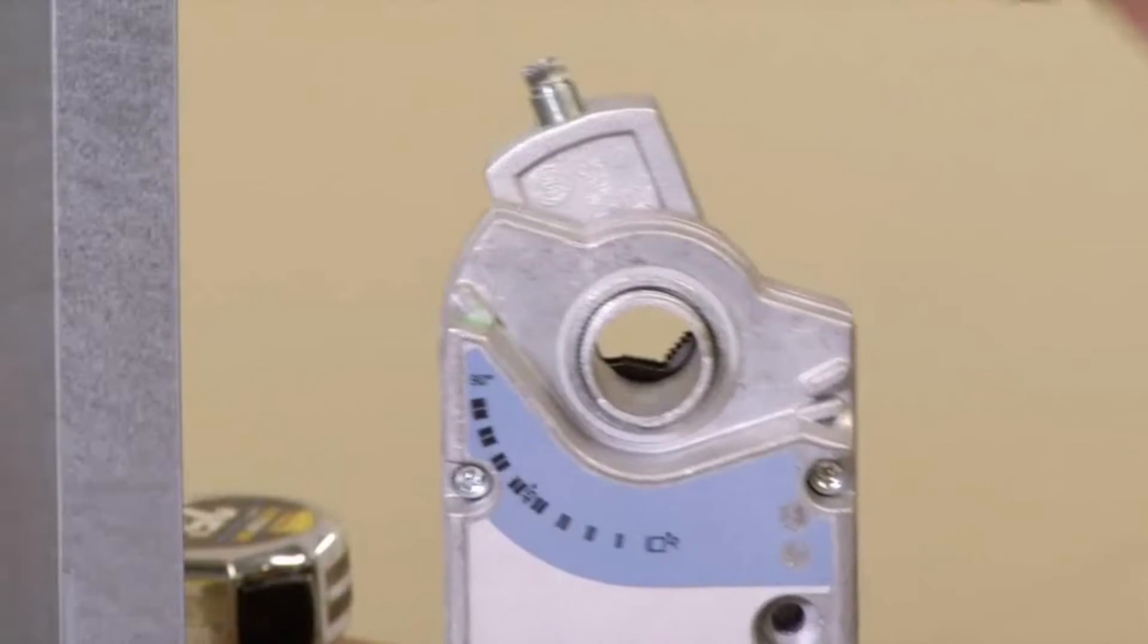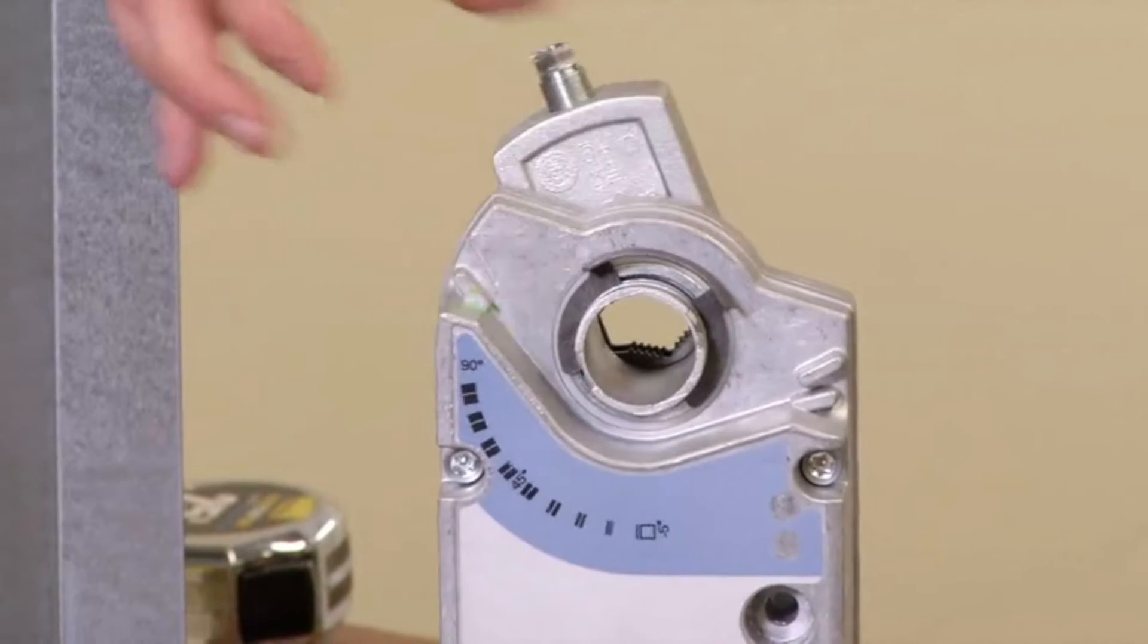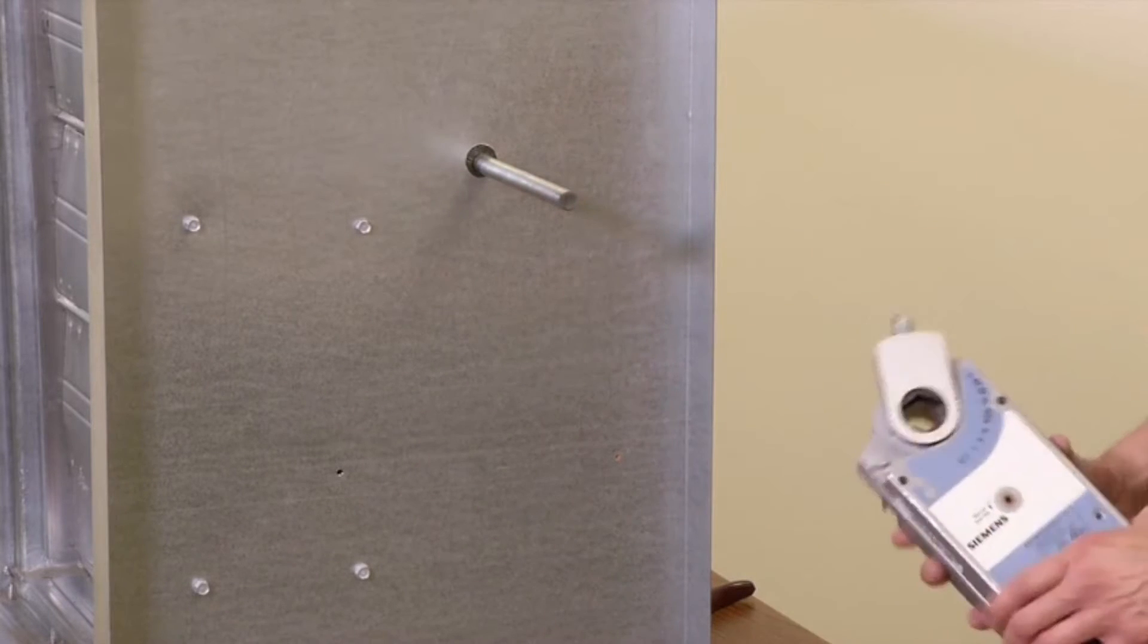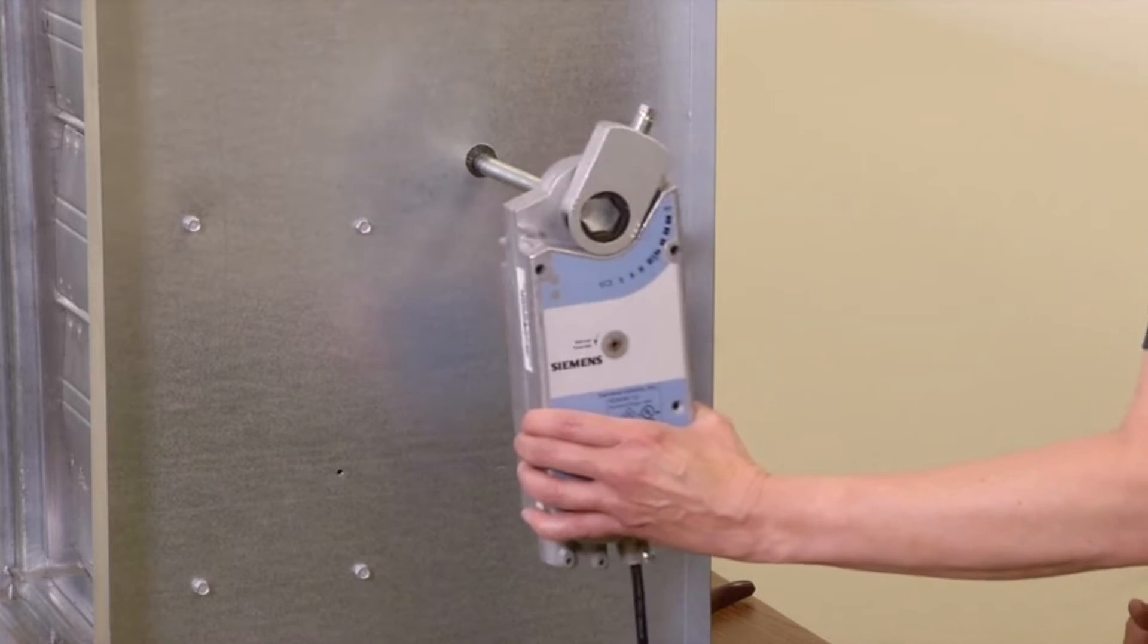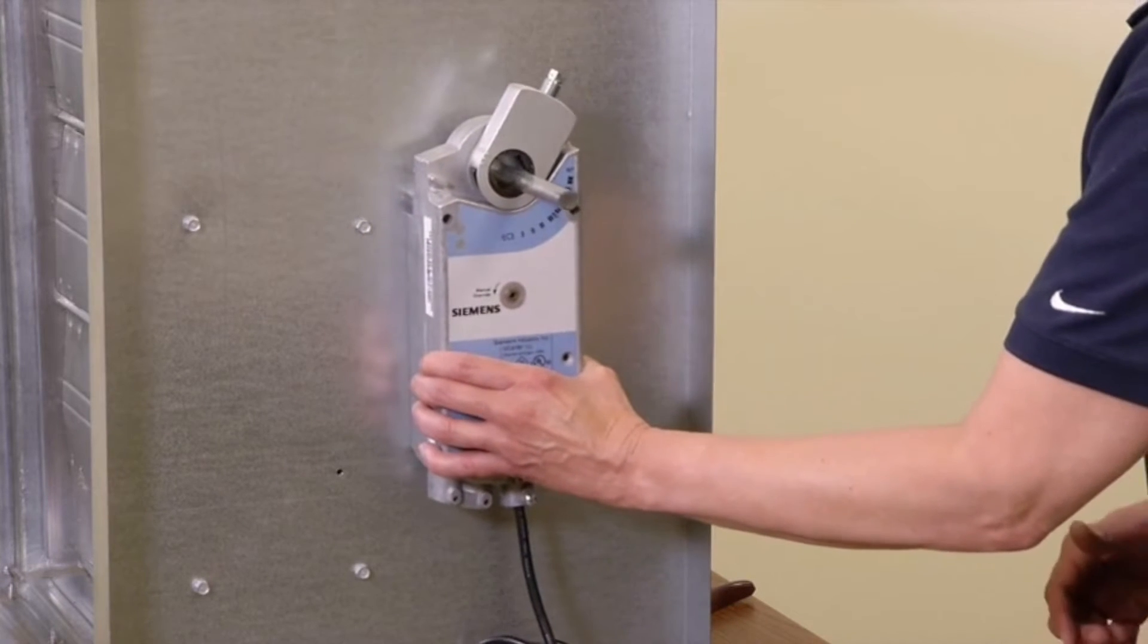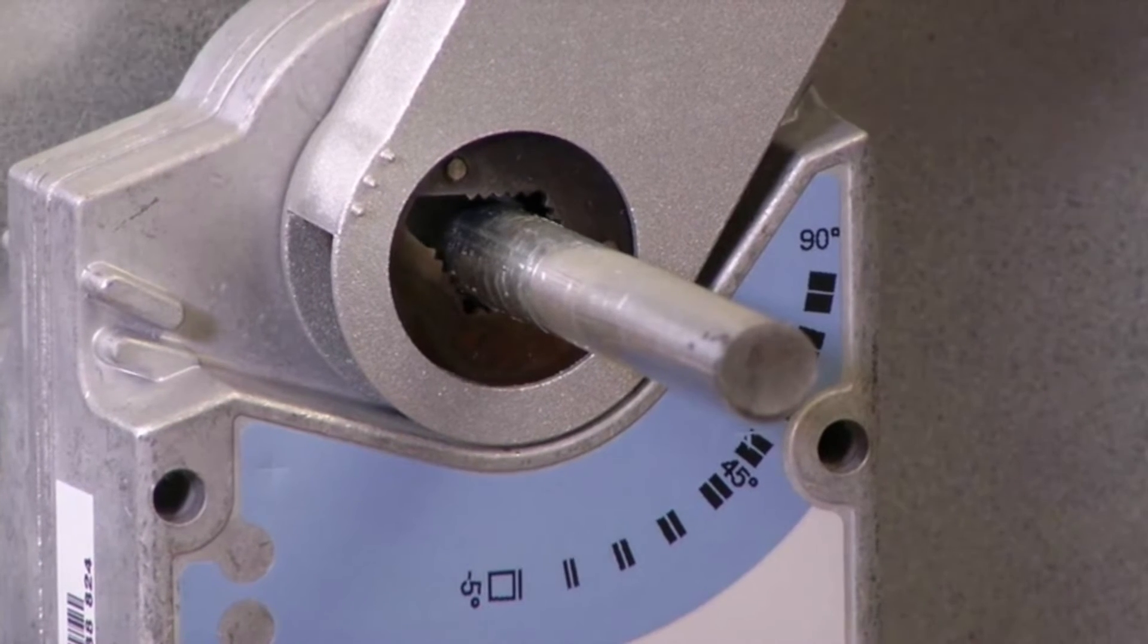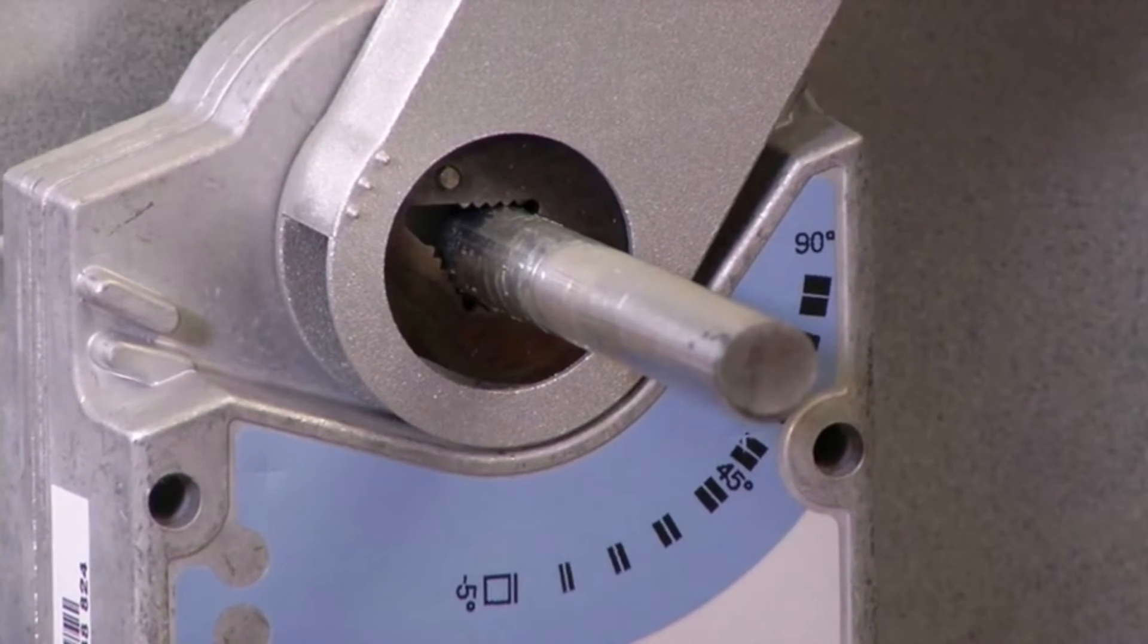Secure the shaft adapter with the locking clip. With the damper closed, mark the shaft center line for a visual indication of the position. Place the actuator on the shaft and tighten the shaft adapter by hand. The self-centering jaws hold the damper shaft in the center to eliminate side loading and provide a secure no-slip connection to the shaft.